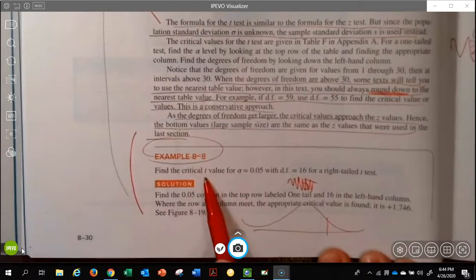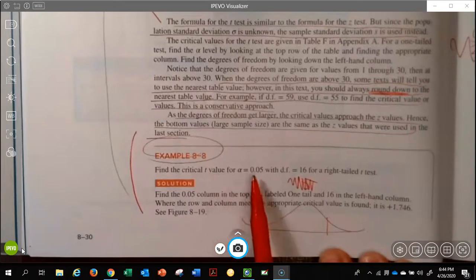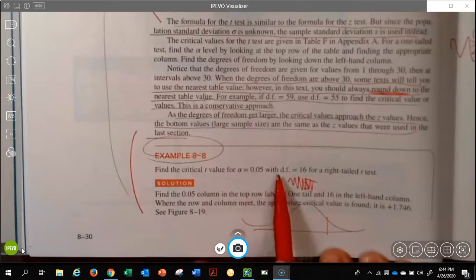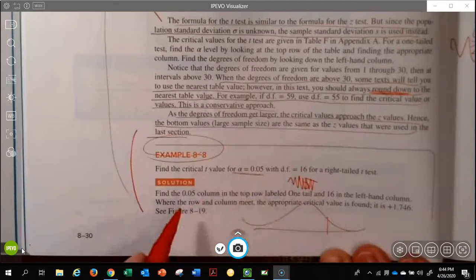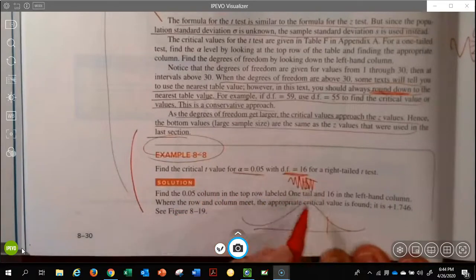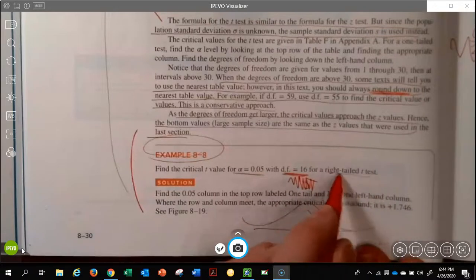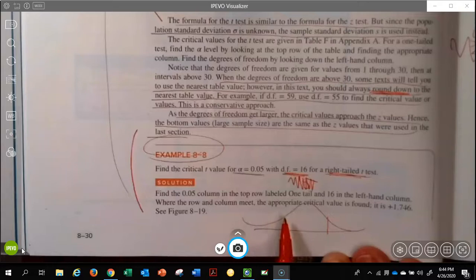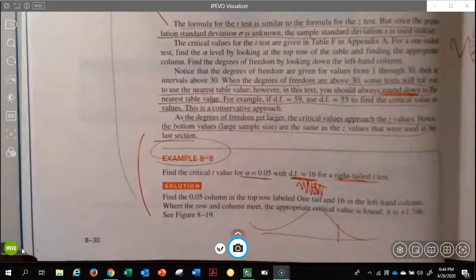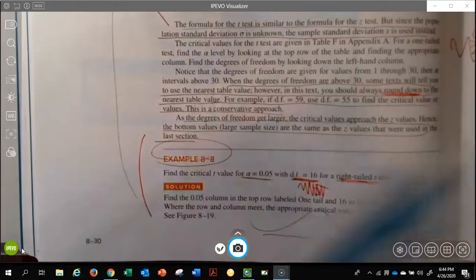So just not to assume, let's go ahead and do some practice. Find the critical t value when alpha is .05, degrees of freedom of 16. So they're handing it to us. They're handing us the alpha. They're handing us the degrees of freedom. We just got to figure out if it's one tail or two. And when it says a right tailed test, they're screaming at us one tail.